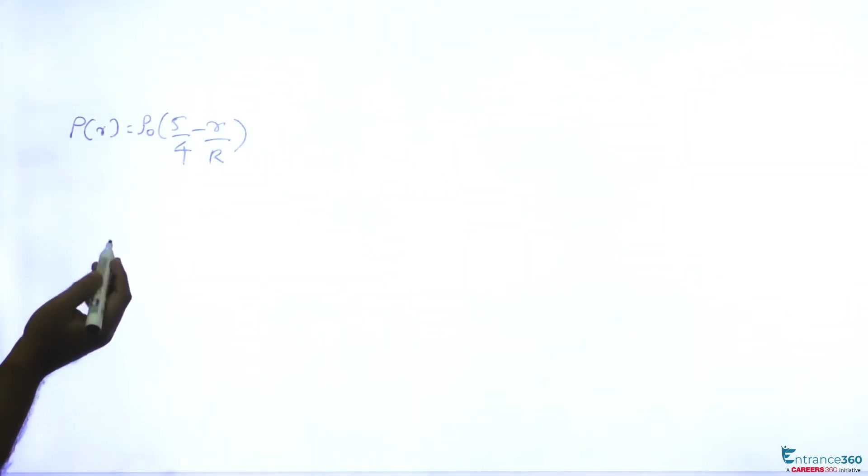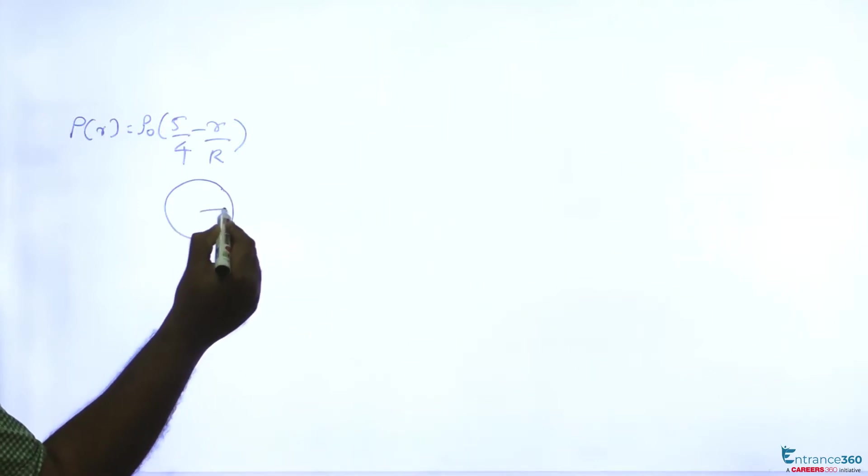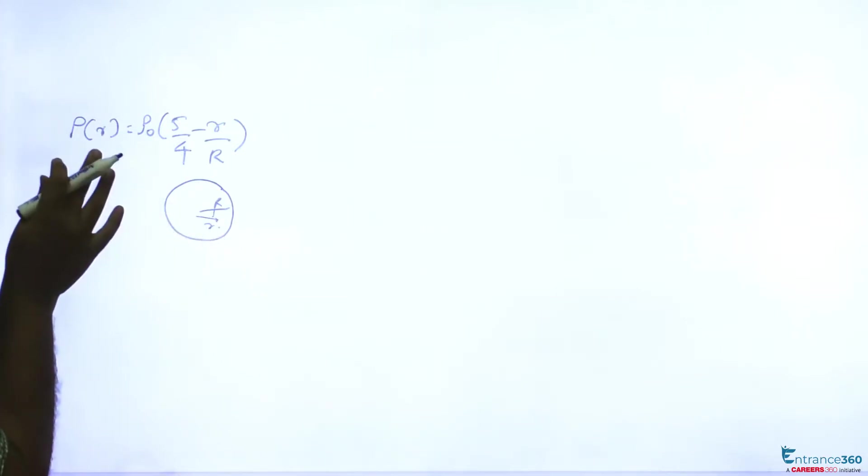Now we are given a sphere of radius R. We have to find the electric field at a distance small r such that the density is like this.